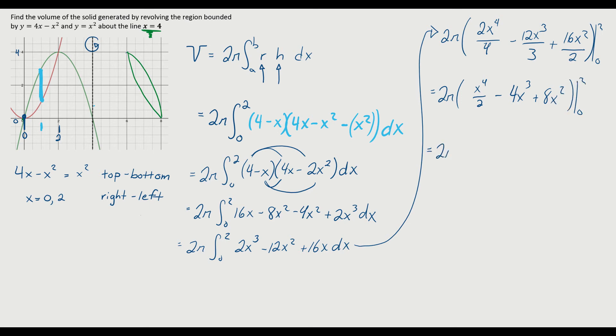All right, so I just have to evaluate this at 2, because when I evaluate at 0, it all eliminates. So 2 to the fourth is 16, 16 divided by 2 is 8. 2 cubed is 8 times 4 is 32. And then 2 squared is 4 times 8 is 32. Look at that. I have 2 pi times 8, once the 32s cancel, and then I get 16 pi, and we get units cubed. So that is the volume of our solid.